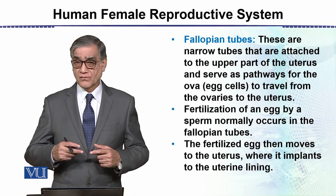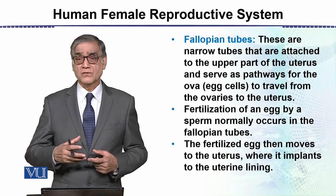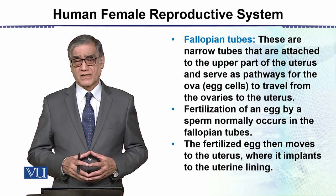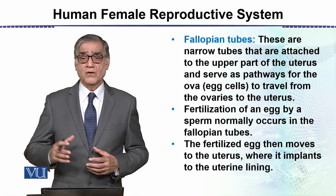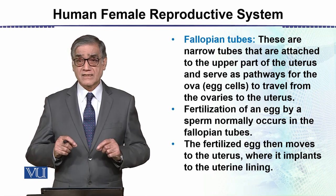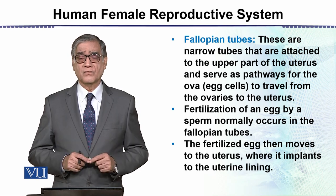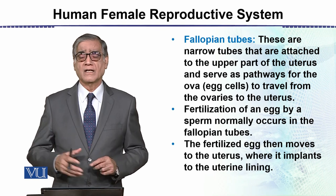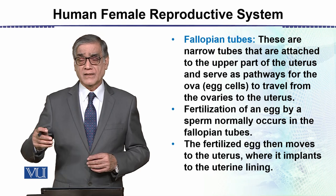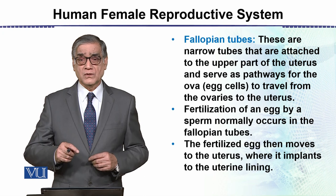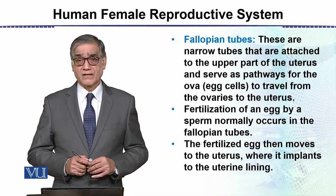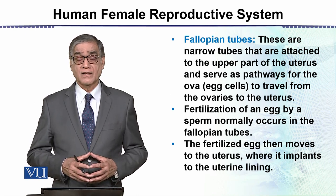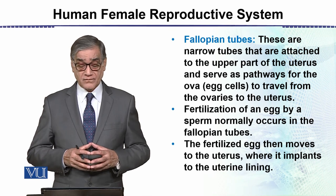Sperms travel all the way upward from the vagina, past the uterus, and into the Fallopian tube. Fertilization occurs very close to the fimbria, near the termination of the Fallopian tube, where the egg has been released during ovulation. The fertilization process occurs inside the Fallopian tube. The fertilized egg then passes through the Fallopian tube into the uterus, where it implants into the uterine lining. This is all about the Human Female Reproductive System.